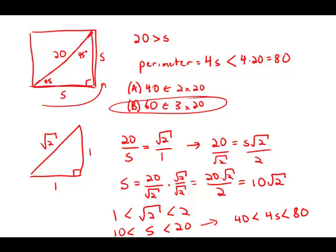And so that means that 4 times the side has to be bigger than 40 and smaller than 80. 4 times the side, which is the perimeter. So the perimeter has to be bigger than 40 and smaller than 80. Well, the only answer choice that fits in that range is answer choice B.